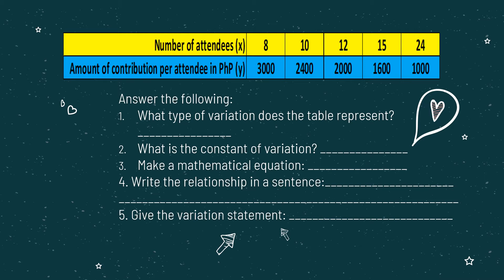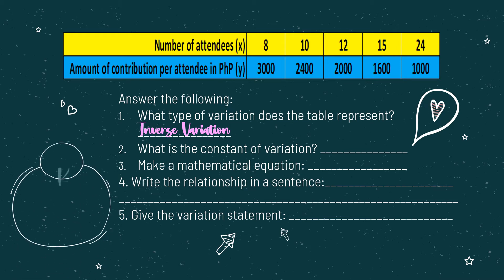Because the two quantities involved are inversely proportional to each other — as the number of attendees increases, the amount of contribution per attendee decreases. The answer for number one is inverse variation. Since the situation illustrates an inverse variation, in order to find the constant of variation, our formula will be K, which represents the constant of variation, equal to the product of the two quantities.